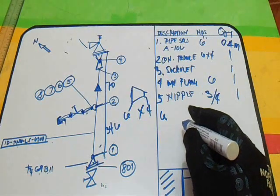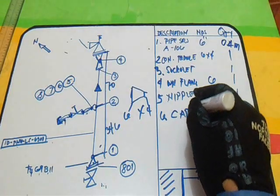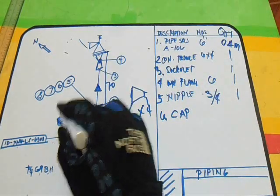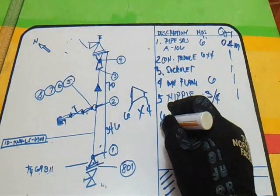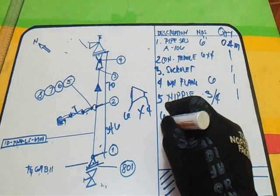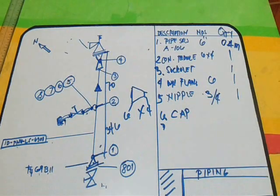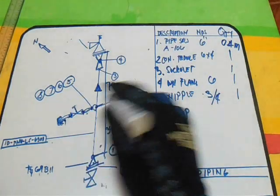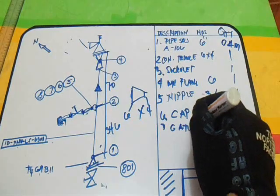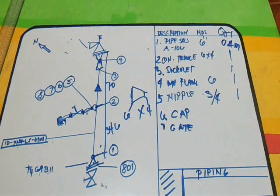Number 6, so we have a cap. In the end of this line, this is the cap, skid cap. And the 7, just write it down here. So the valve, we have a gate valve. This is the example of how to do material takeoff for the isometric drawing.